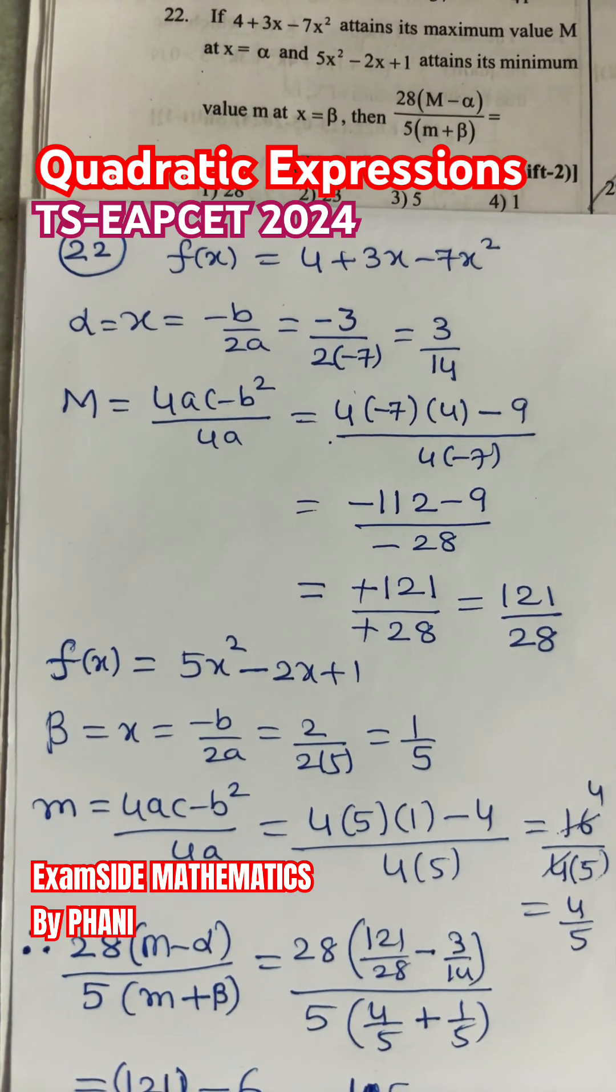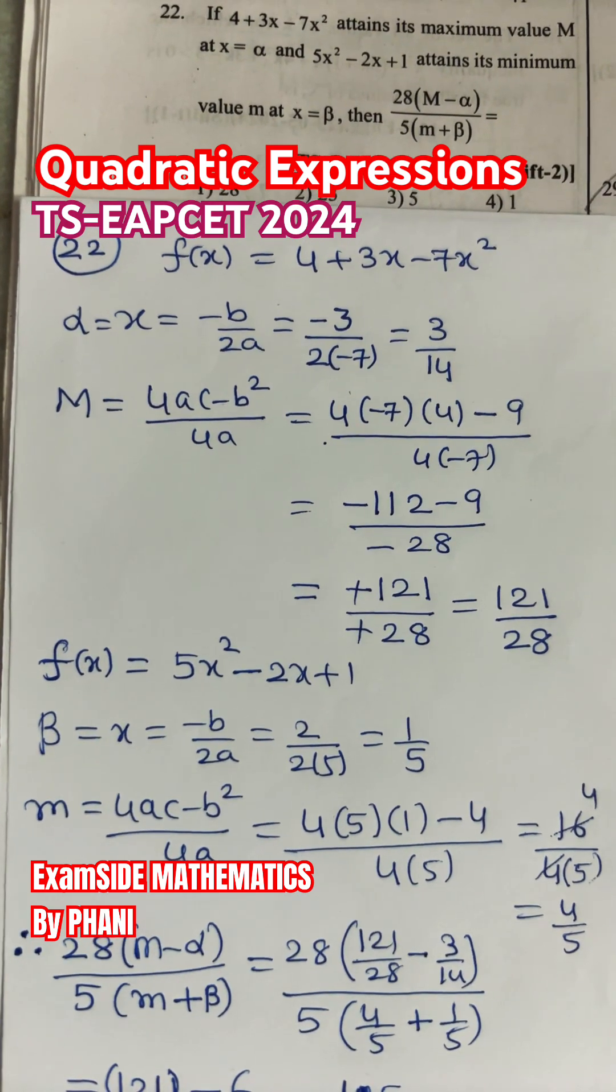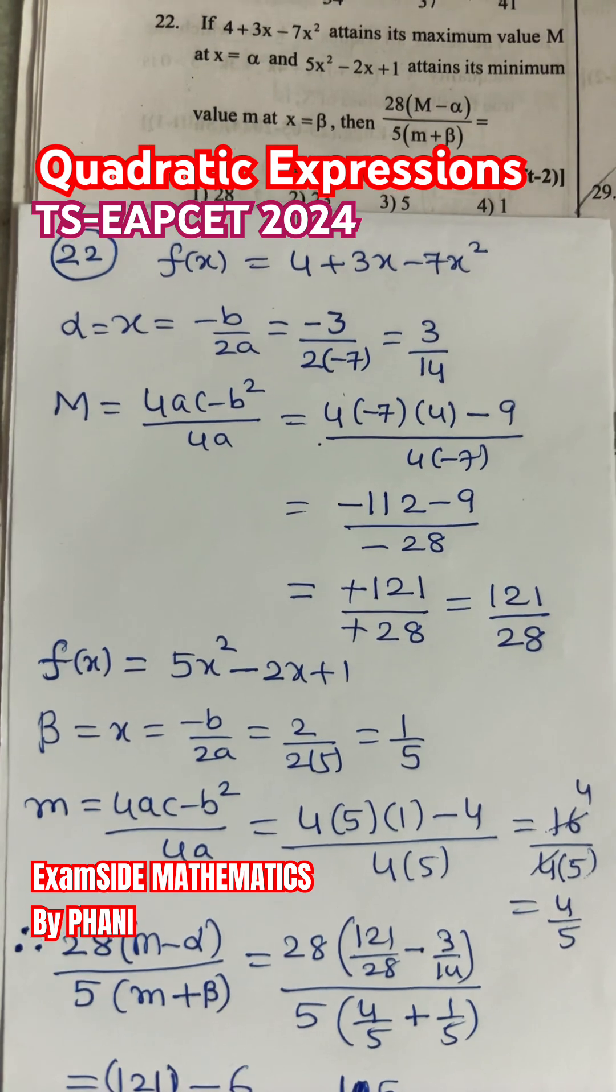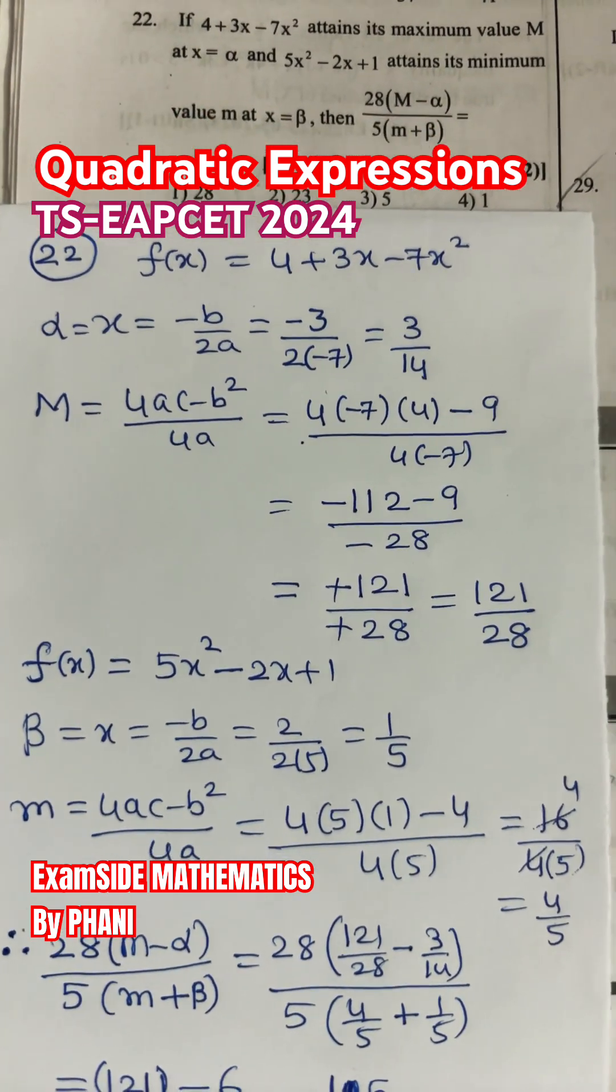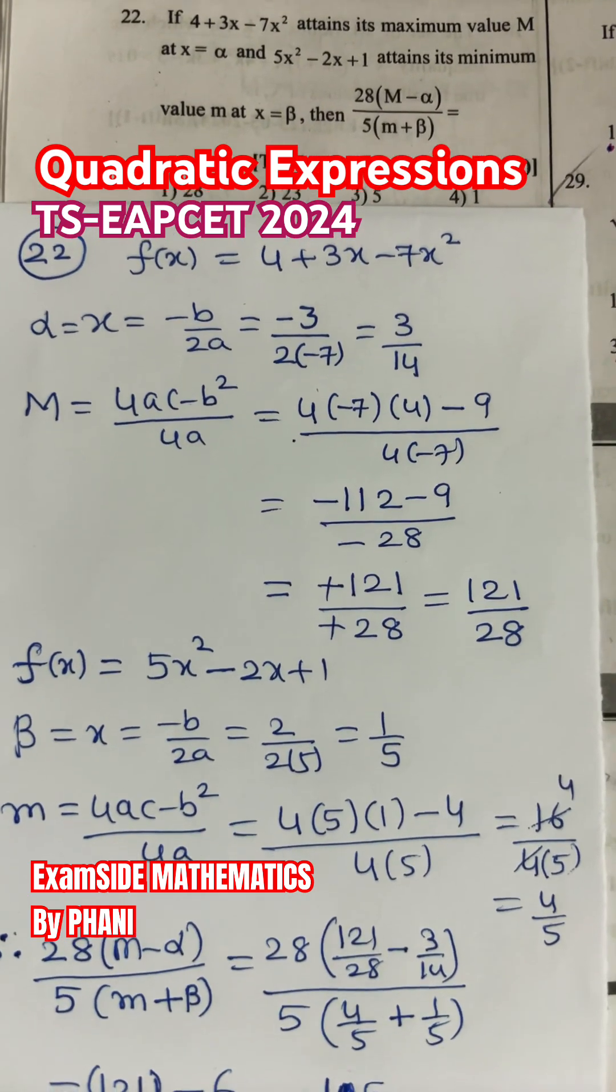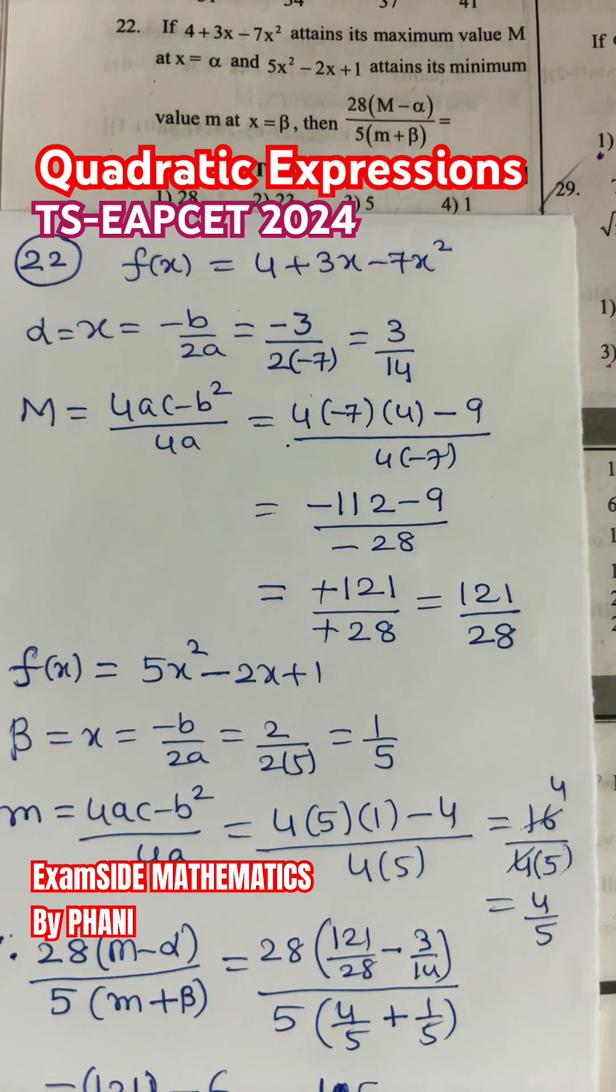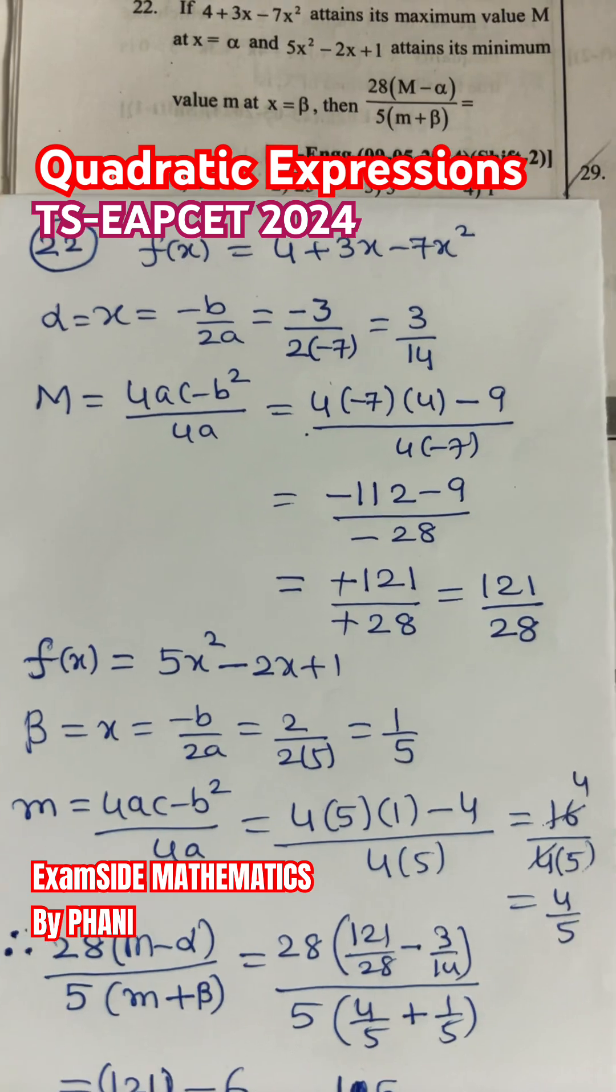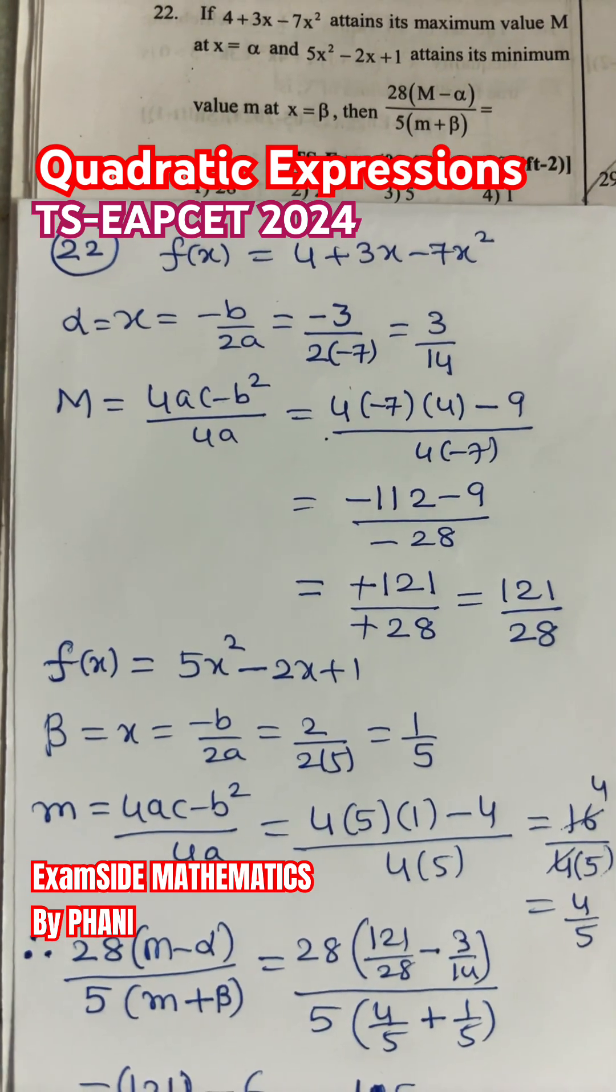then it has minimum value at β = x = -b/2a. So at x = -b/2a, b value and a value substituting this and simplify, you will get β = 1/5.